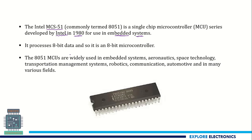This microcontroller 8051 is an 8-bit data device, meaning it processes 8 bits of data at a time — that is why it is named an 8-bit microcontroller. For comparison, a 16-bit microcontroller would process 16 bits of data at a time. So, 8051 can process up to 8 bits of data at a time.